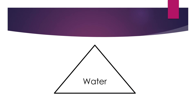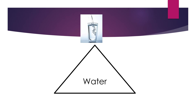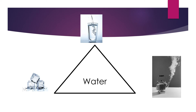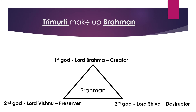If I pop water in the middle of this triangle here — we've used a triangle because of the number three — water can be in the form of a liquid, it can be a solid in the form of ice, and it also can be steam. But all of those things are still water; they just look and feel a different way. The Trimurti make up Brahman, and just like water, ice, and steam, Brahman has three different forms.